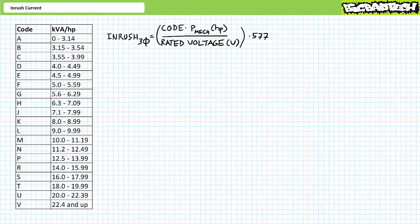As you're no doubt aware, a motor at rest experiences a momentary surge of current known as inrush starting current or locked rotor current when energized by full voltage. Inrush current may be about six times rated current, although in this lecture we'll learn to calculate it more precisely.